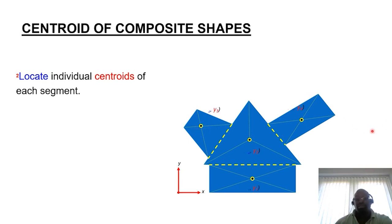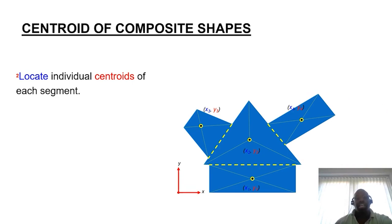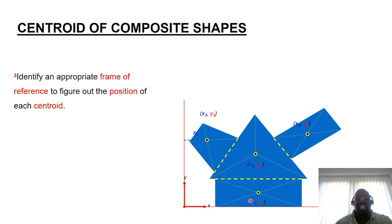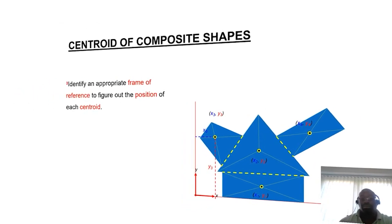You could define shape one in terms of having coordinates x1 and y1, for shape two x2 and y2, for shape three x3 and y3, and so forth. Now that you've identified the positions of the individual centroids for the segmented forms, you need to measure the centroids to the reference axis as defined in the given problem. If you project from the central position to the y-axis, that defines the x-coordinate; and if you project from the centroid to the x-axis, that defines the y-coordinate. You do that for all the segmented forms.